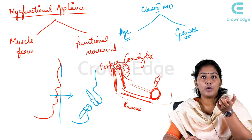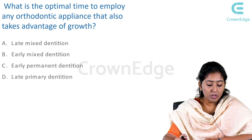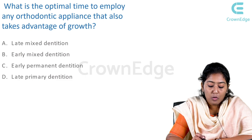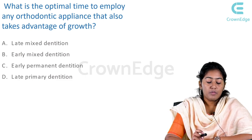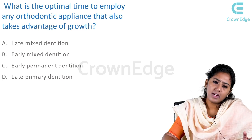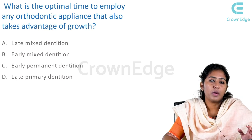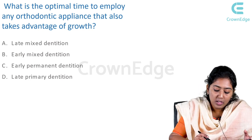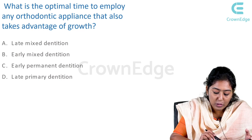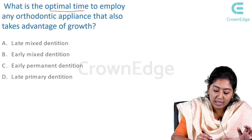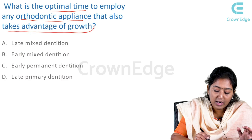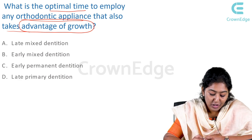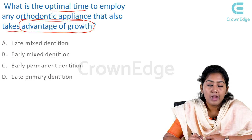Let's look at an exam question: 'What is the optimal time to employ any orthodontic appliance that also takes advantage of growth?' The keywords here are 'optimal time,' 'orthodontic appliance,' and 'takes advantage of growth.' The options are: (A) late mixed dentition, (B) early mixed dentition, (C) early permanent dentition, and (D) late primary dentition.